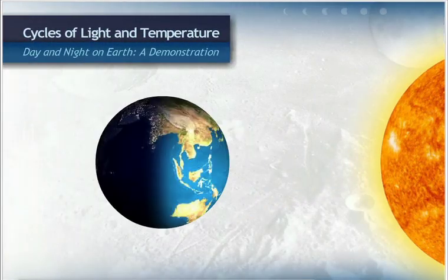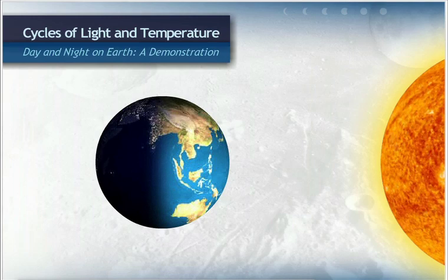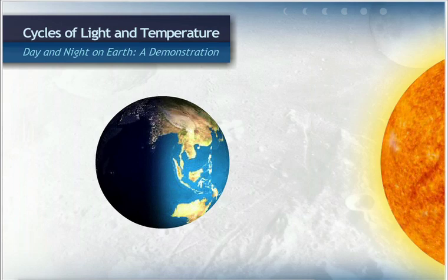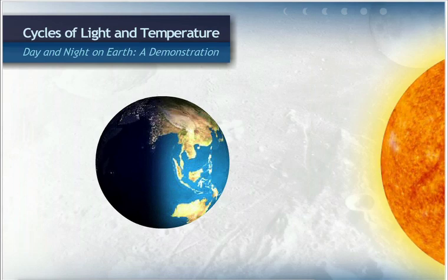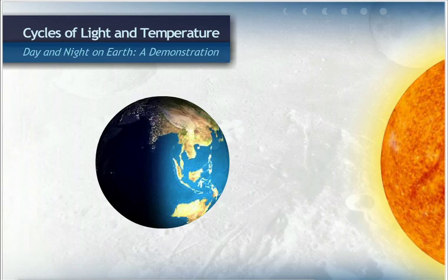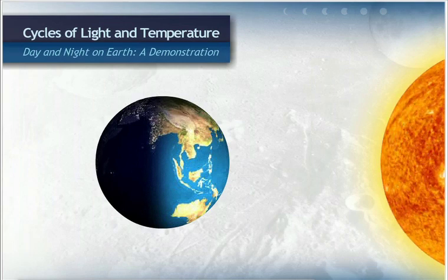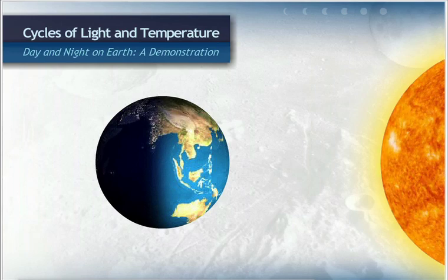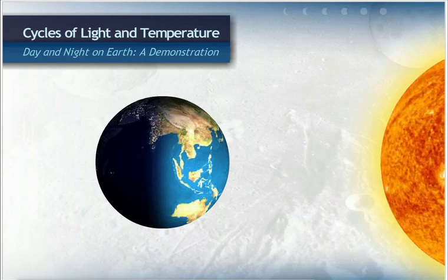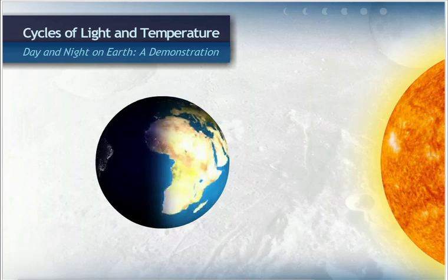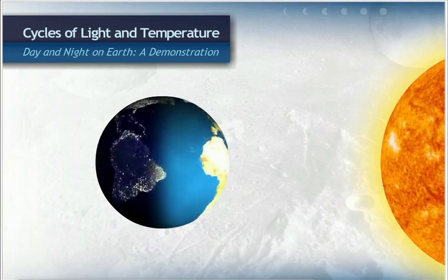Since the earth is constantly rotating, the part of the earth that is illuminated by the sun is always changing. Take a look. Here is a model of the earth and sun. In reality, the earth is much smaller than the sun and farther away from it. But this model, even though it's not to scale, will help us review the cause of day and night.